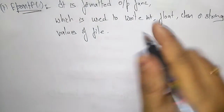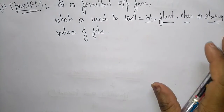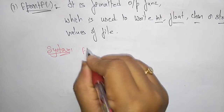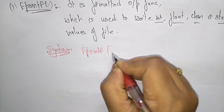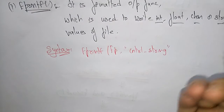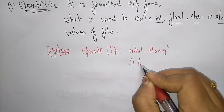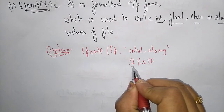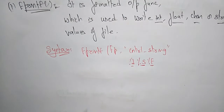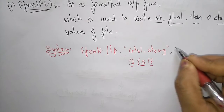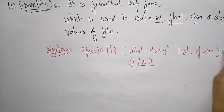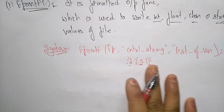The syntax for fprintf is: fprintf(file_pointer, control_string, list_of_variables). The control strings are: %d for integer, %s for string, and %f for float. The list of variables refers to the data items used in the program. This is the syntax for fprintf.